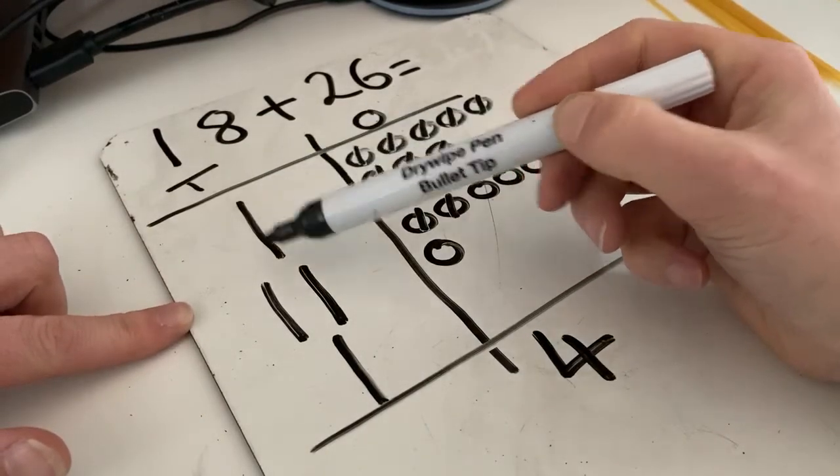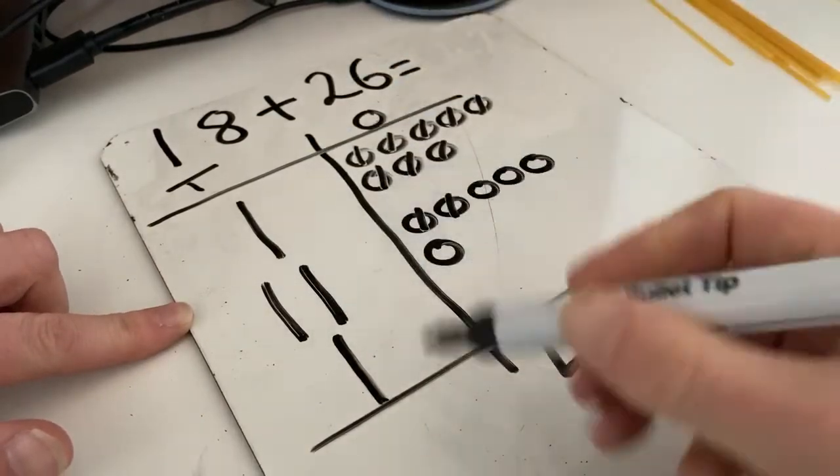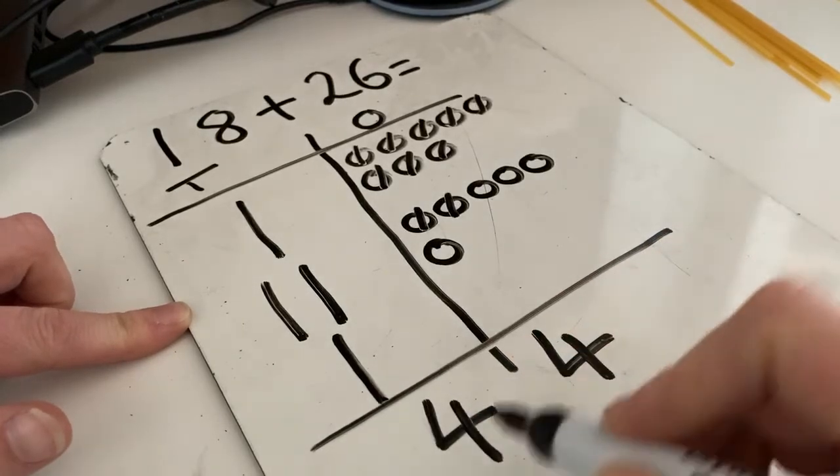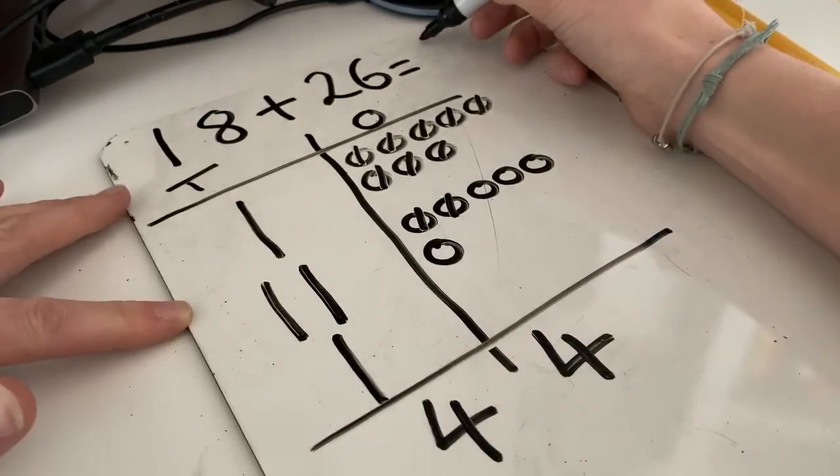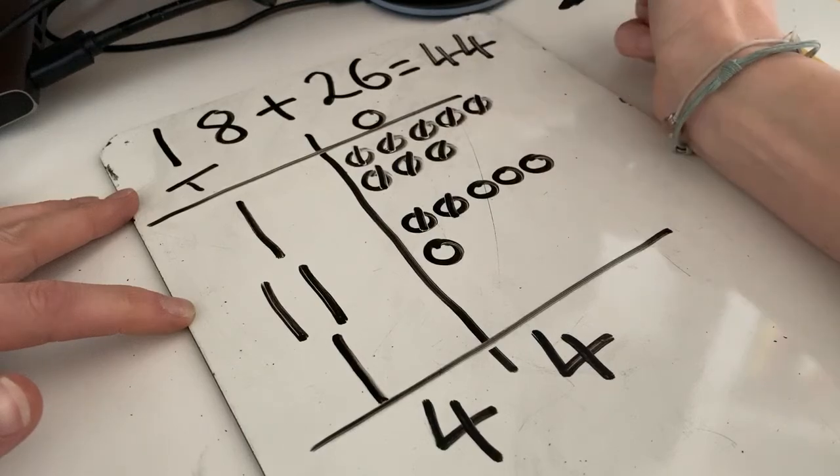Four tens. And let's count up our tens. One, two, three, four. And four tens. Eighteen and twenty-six is forty-four. There we go.